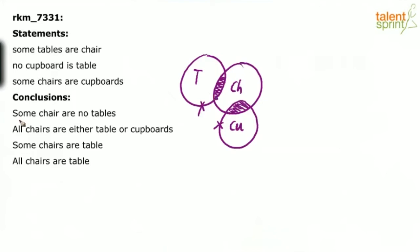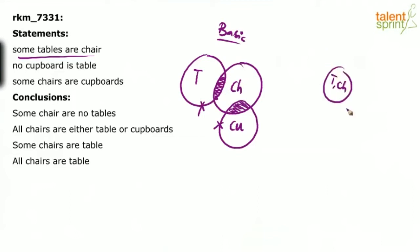Now look at the conclusions. The first one: some chairs are not tables. Is it true? If you look at just the first statement — some tables are chairs — you know that it can also be drawn in a way where tables and chairs are both equal. If this is considered a possible diagram, then some chairs are not tables will become false, because here all the chairs are tables. So some chairs are not tables would be a wrong conclusion just by looking at statement 1.